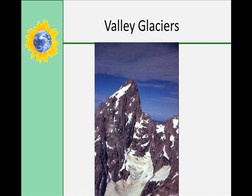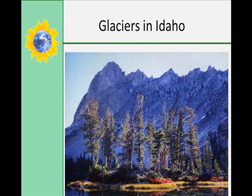A glacial cirque is a steep-sided, rounded, bowl-shaped feature carved into a mountain at the head of a glacial valley. In the cirque, snow accumulates and eventually converts to glacier ice before heading down the glacial valley. A horn is the sharp peak that remains after cirques have cut back into a mountain on several sides. Sharp ridges, called aretes, separate adjacent glacially carved valleys. The Sawtooth Mountains of Idaho offer exceptional examples of glacial erosion, and Redfish Lake near Stanley was also created by glaciers in Idaho.